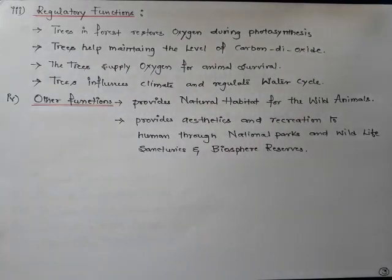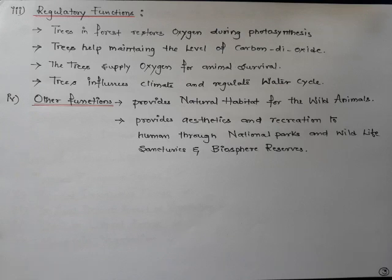Trees also help in maintaining the level of carbon dioxide in the atmosphere. Over-accumulation of carbon dioxide in the atmosphere can result in the greenhouse effect, which can cause global warming and simultaneously cause lots of distortion and disturbance in the ecological balance.